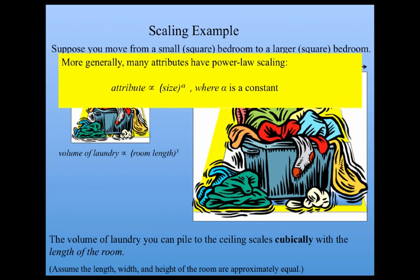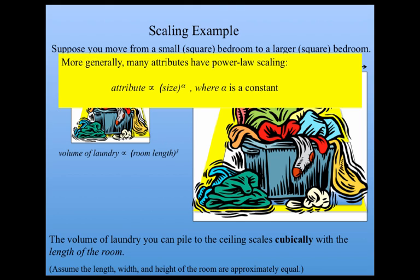In general, many attributes have what we've called power law scaling. We learned about power laws in the networks section of this course. And here the idea is that some attribute, such as volume or area, is proportional to size, here we were using room length, to the power of some constant alpha.